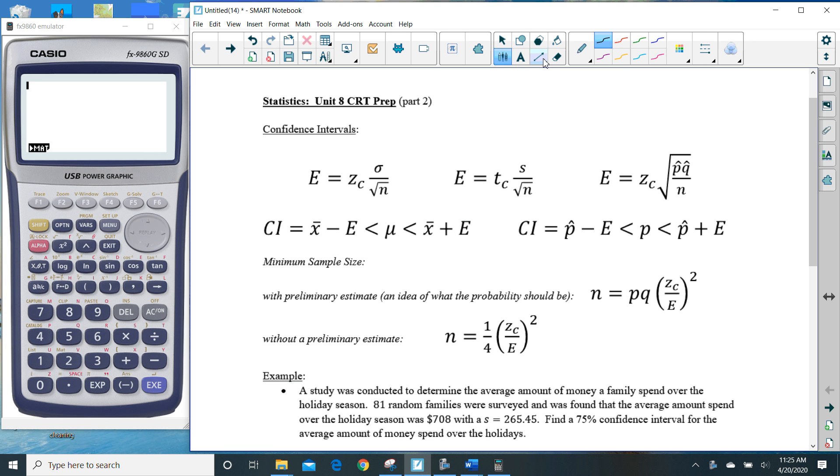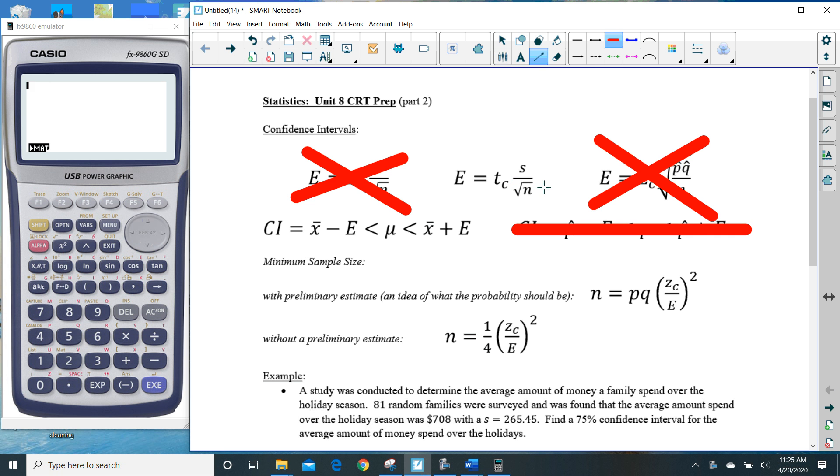So if you are following along, you'll notice that in Part 1 we dealt with standard deviations that came from populations. So we were getting these sigmas, and we were also dealing with probabilities. So these are done. We're not going to go back to these.